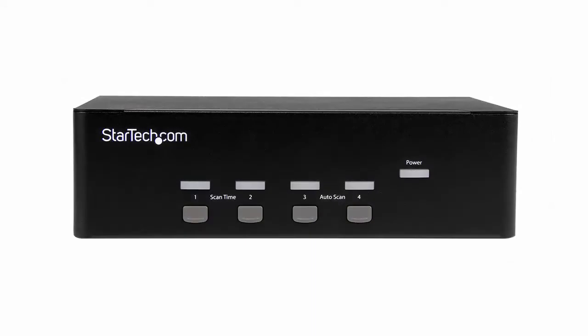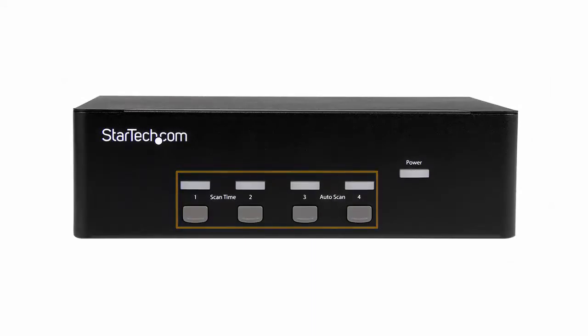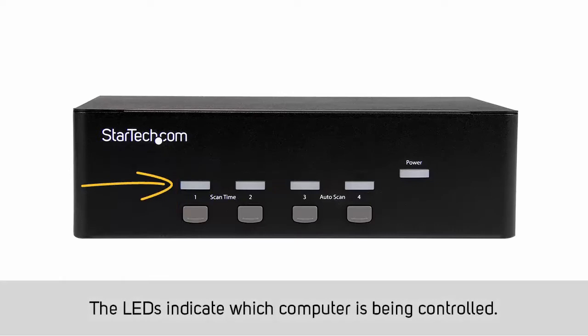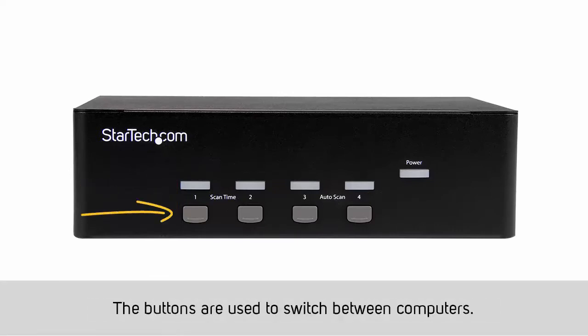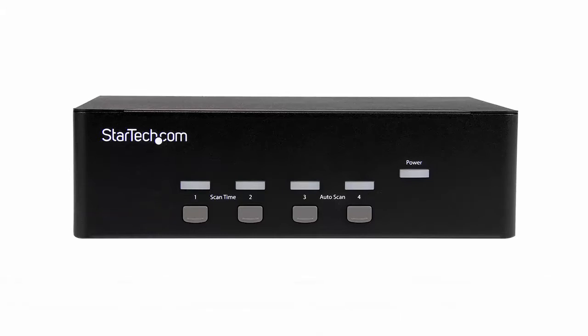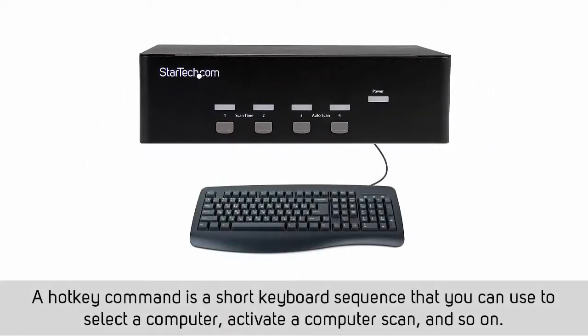In general, the front of a KVM switch will have numbered buttons and LEDs. The LEDs are used to tell you which computer is being controlled, and the buttons are used to switch between them. Depending on the KVM switch, it may also have hotkey support, which will allow you to switch the controlled computer by using certain keyboard combinations or hotkeys.